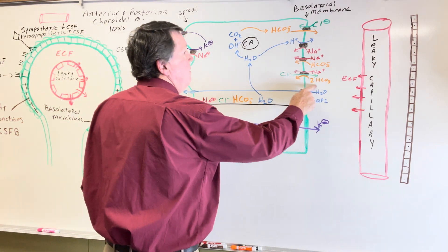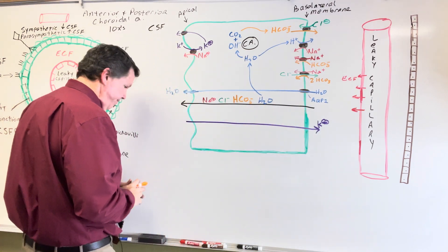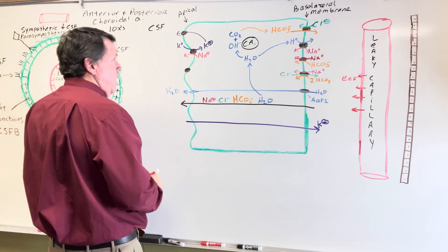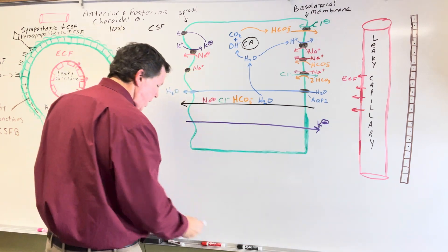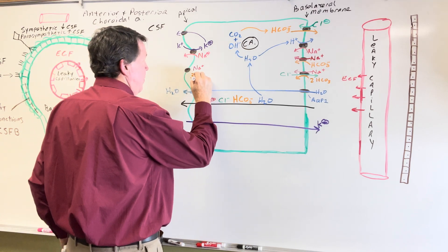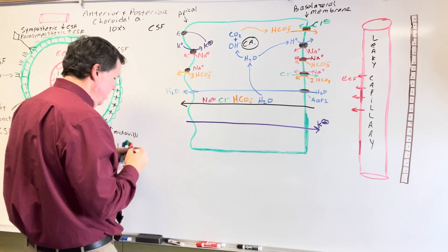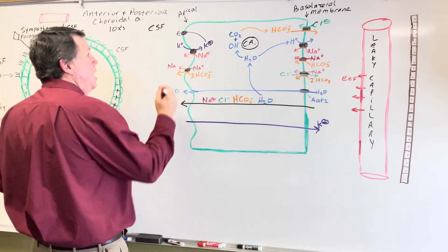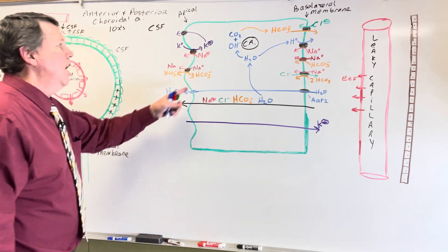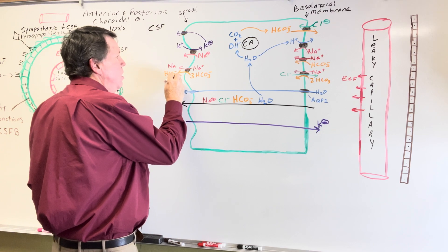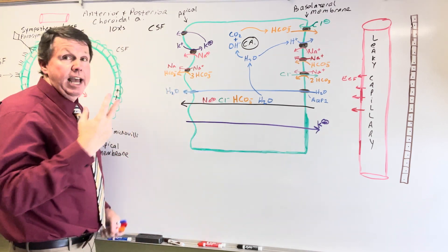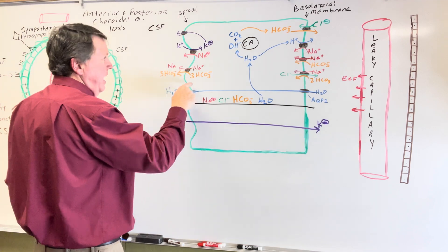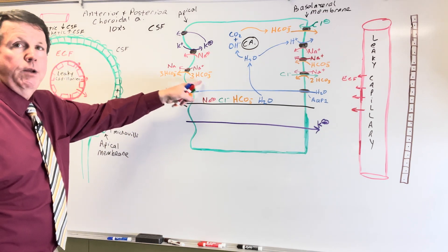Now we have bicarbonates accumulating inside the cell. Sodium together with three bicarbonates can all come through a transporter and be released into the CSF. The reason it's important to have bicarbonate come into the CSF is because we want to keep the nerves neutral — they become acidic as they fire, so we need enough bicarbonate, which is a base, to keep everything neutralized.